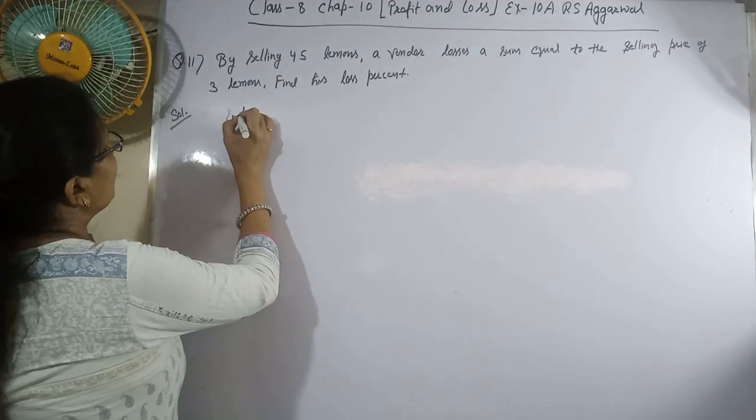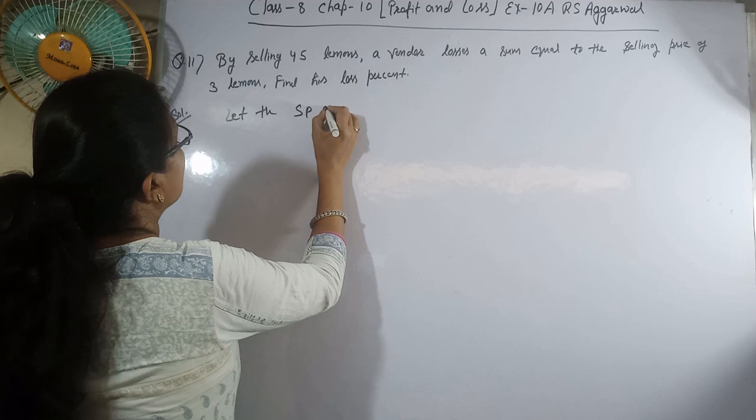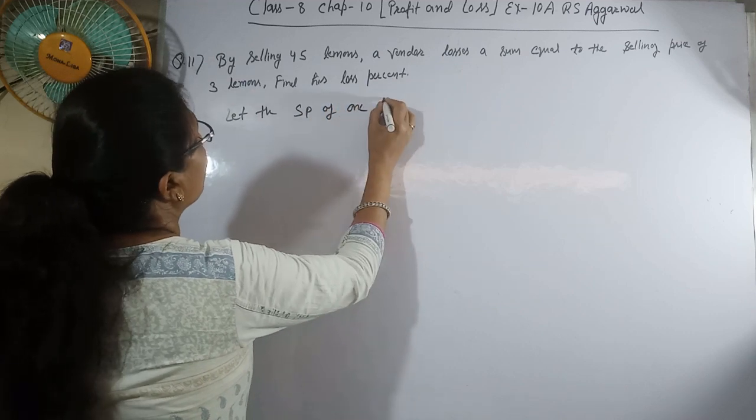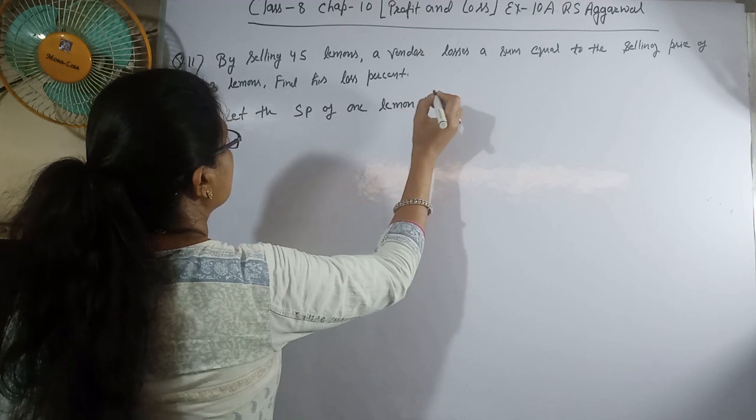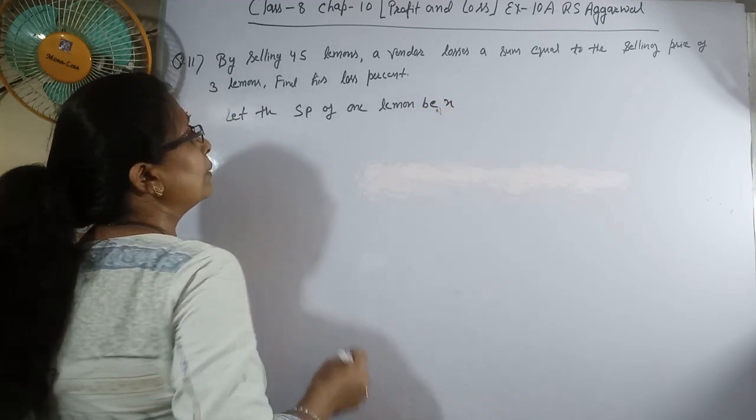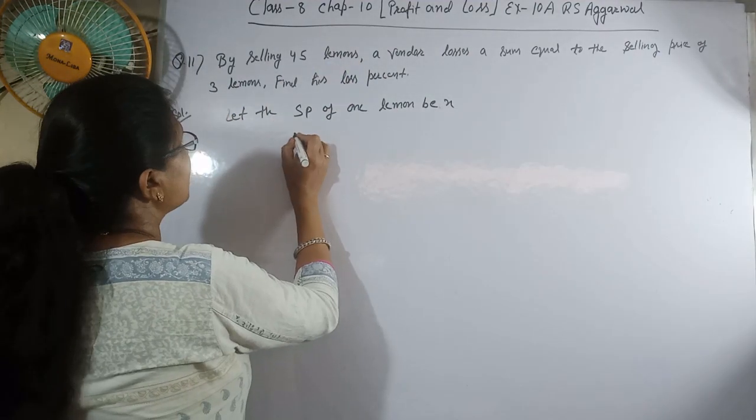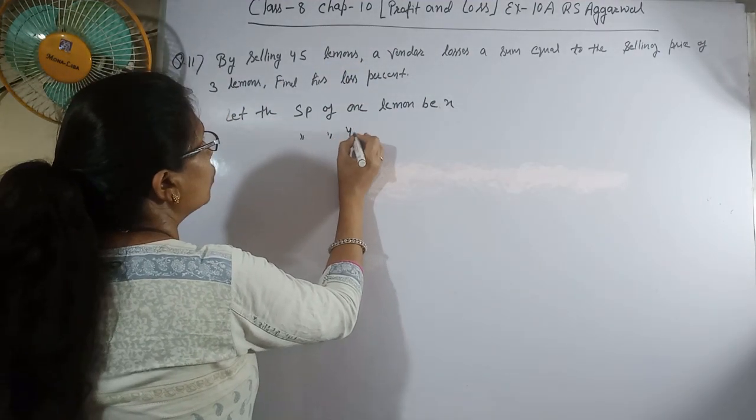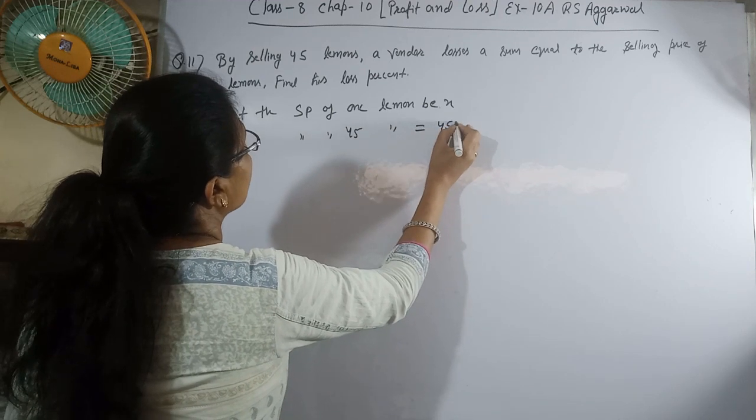Let the SP of one lemon be x. Now, if one lemon's SP is x, then SP of 45 lemons is equal to 45x.